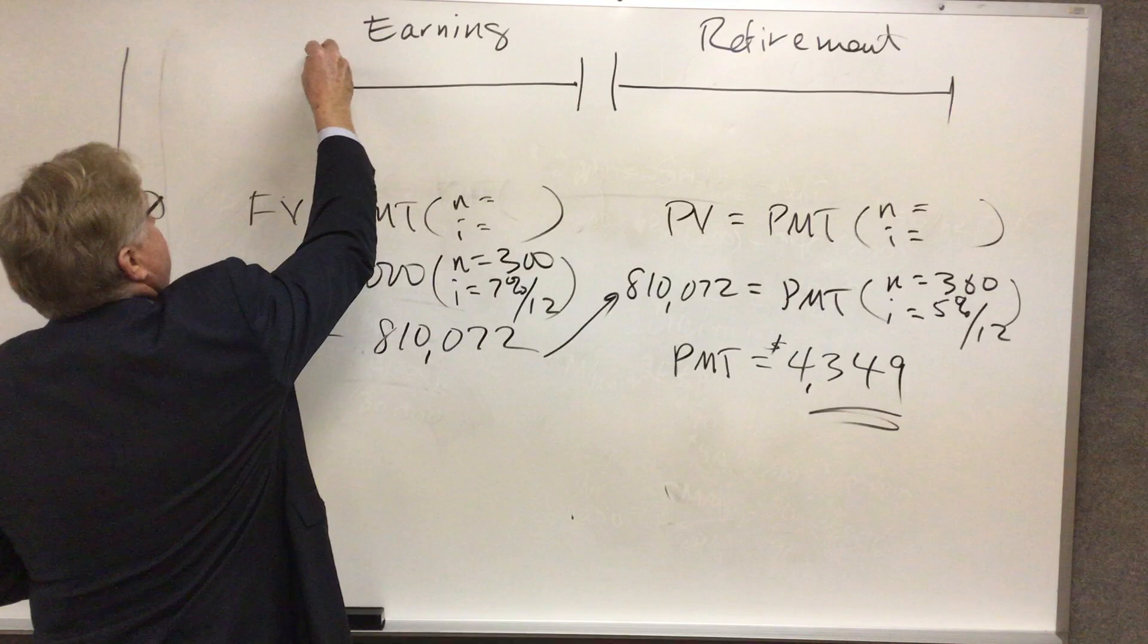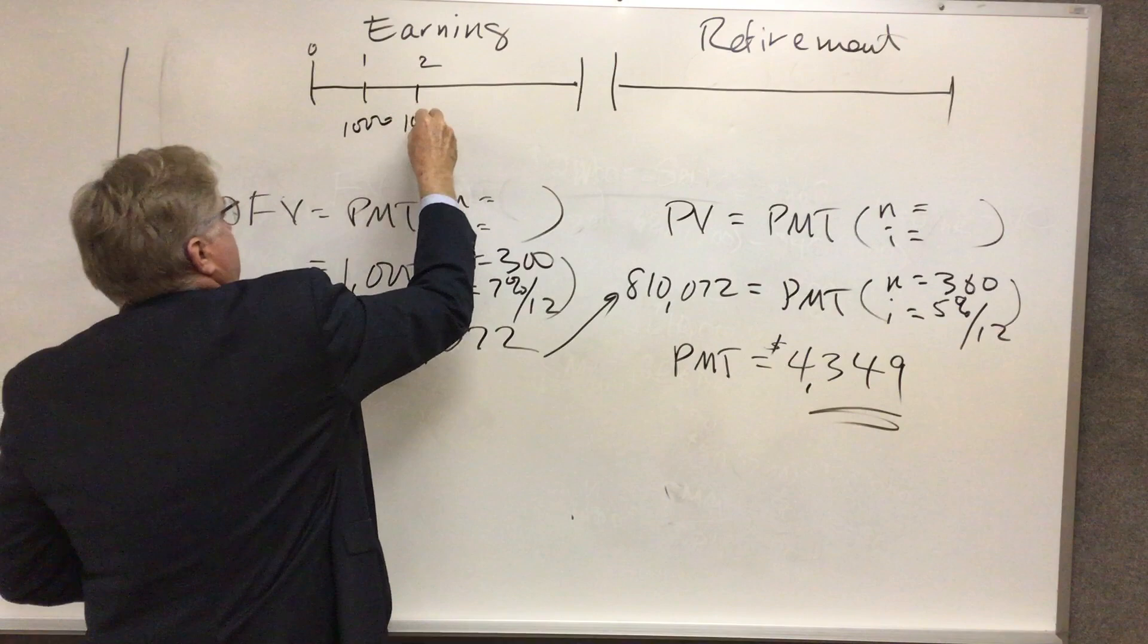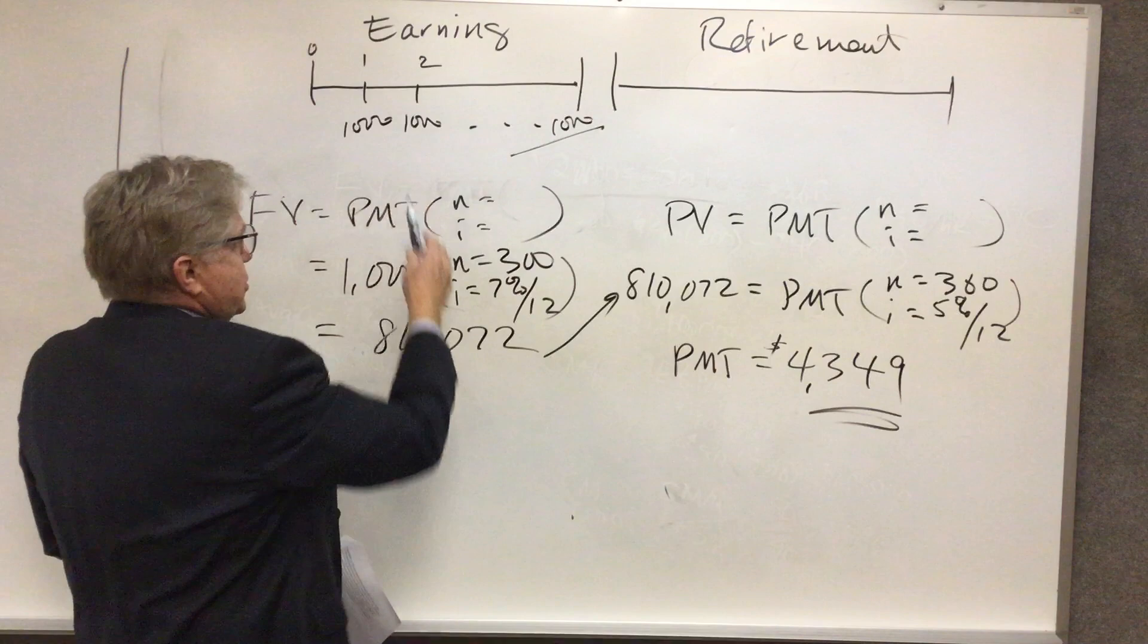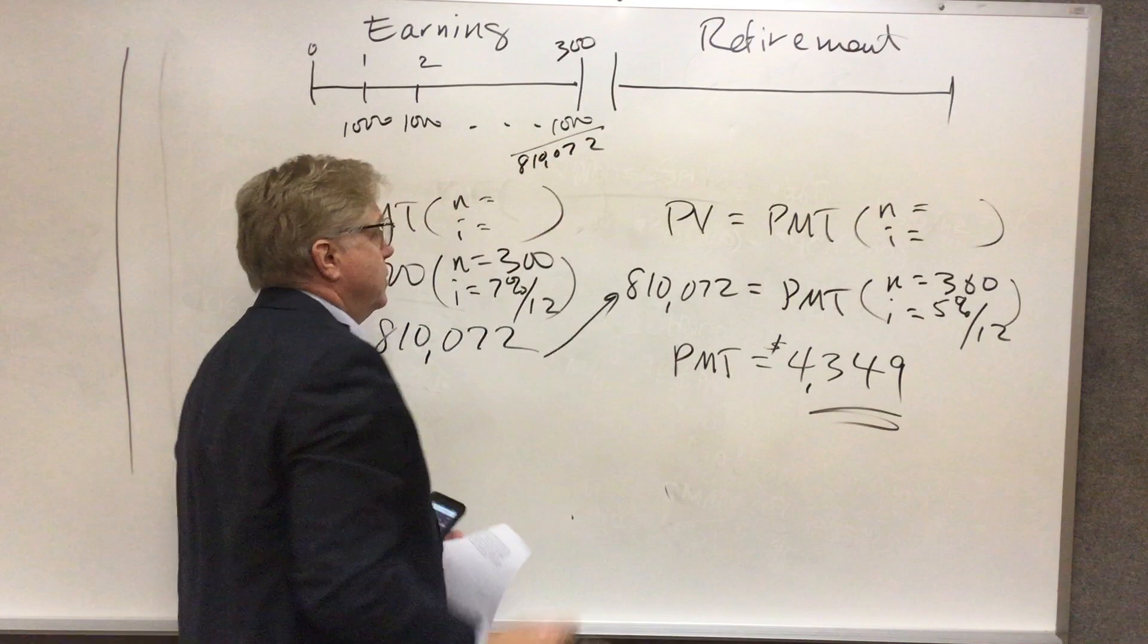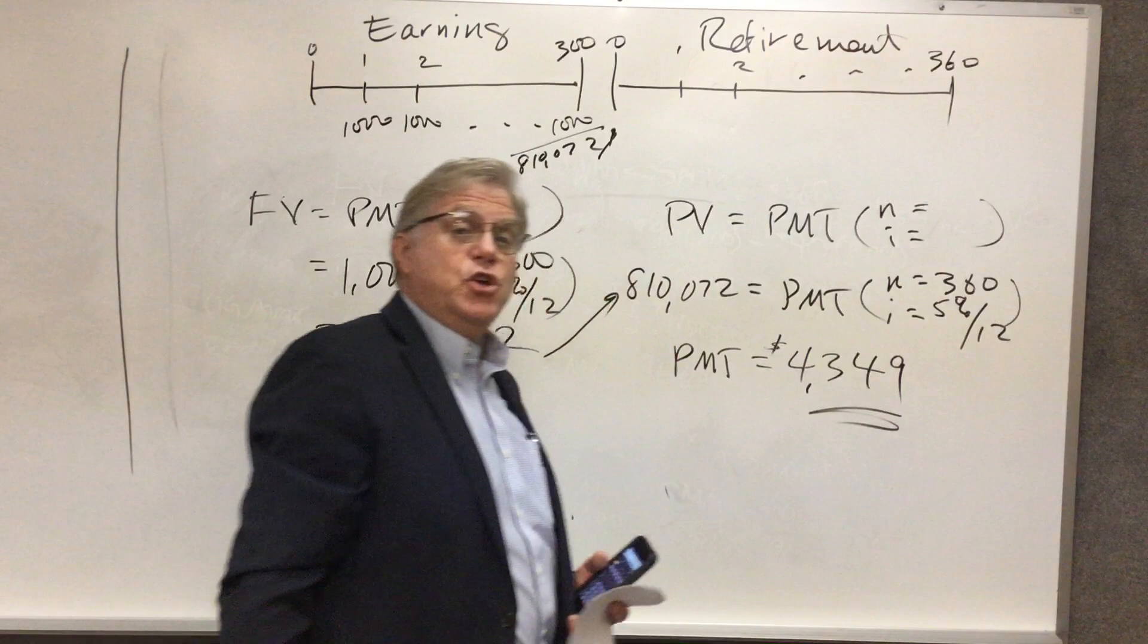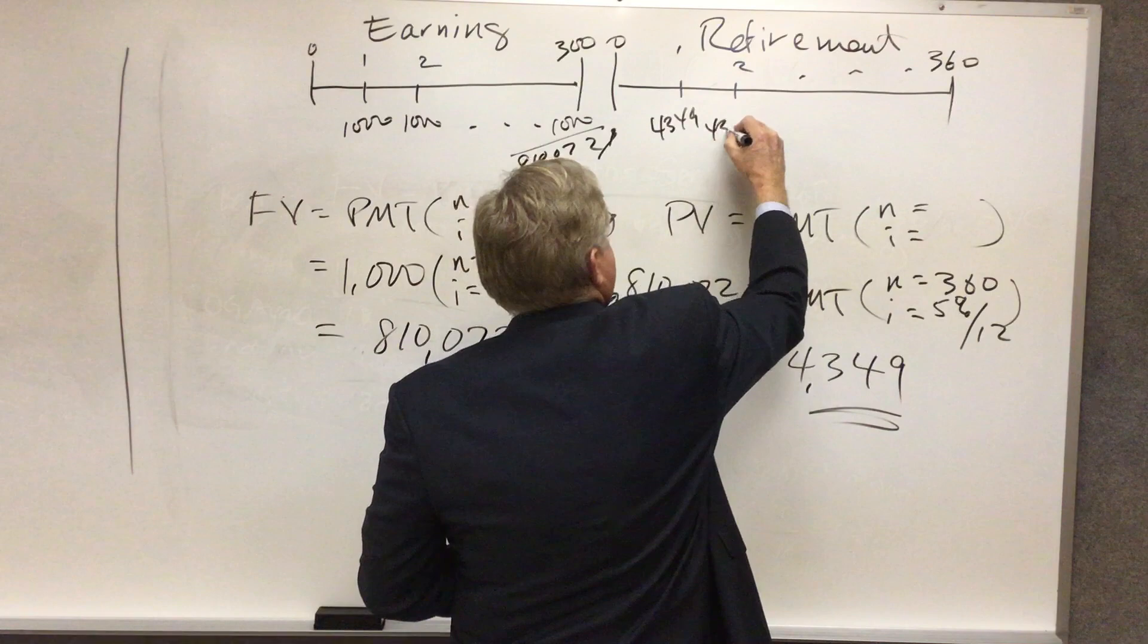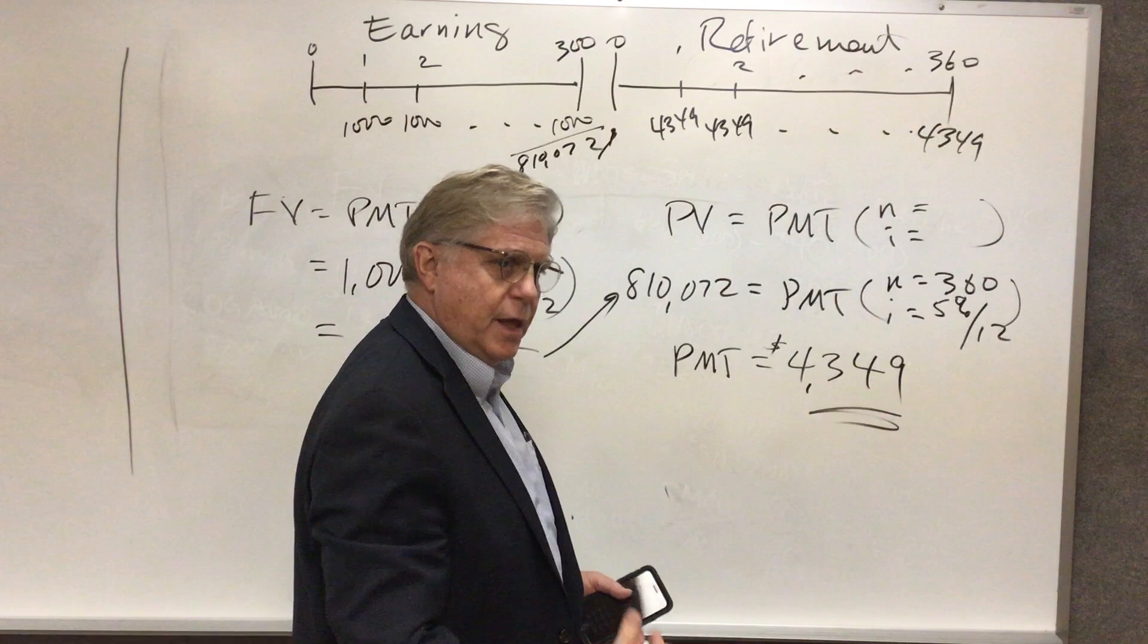Here's how we might represent this. She makes these contributions at the end of each month with the very last one taking place here at the end of the 300th month, and she ends up with $810,072 there. That's what she begins this part of the problem with, and we solved for the amount that she could withdraw each period, and we found out it is $4,349. That is, she retires on one day right here. At the end of that month, she withdraws $4,349 from the account that month, and at the end of every month for 30 years.